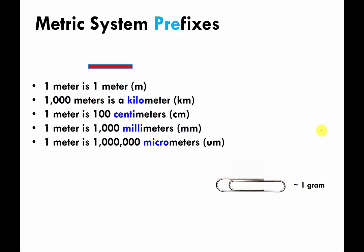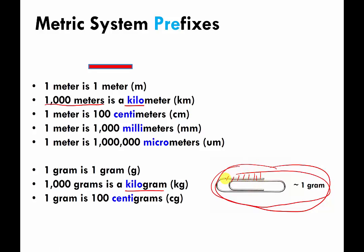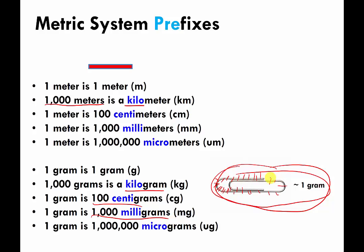Just to emphasize that these are prefixes — you can put them onto different units and they change the unit in the same way. Kilo means group in groups of a thousand. A gram is about the weight of one paper clip. If I want to weigh things much heavier, I can use kilogram — roughly a thousand paper clips. For something smaller, I can break my paper clip into a hundred even pieces — that's a centigram. Break it into a thousand pieces — that's a milligram. Break it into a million pieces — that's a microgram.